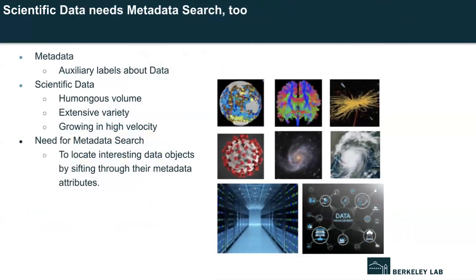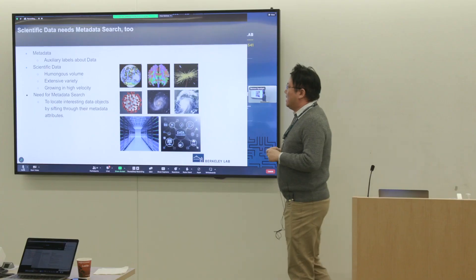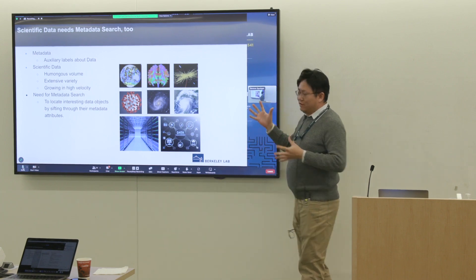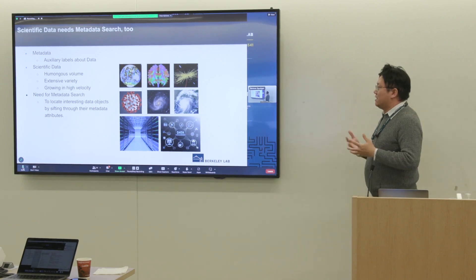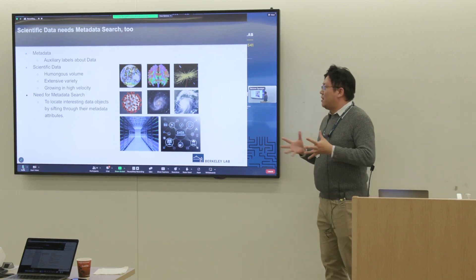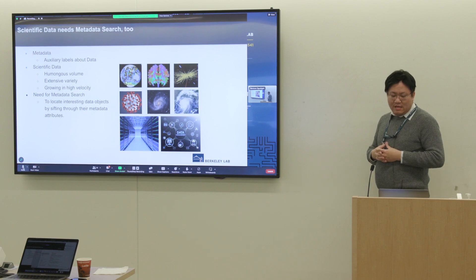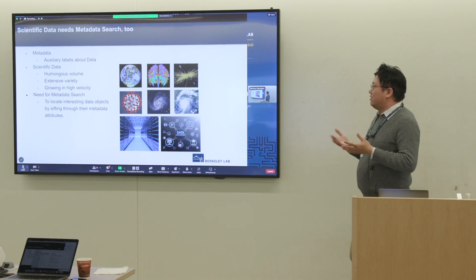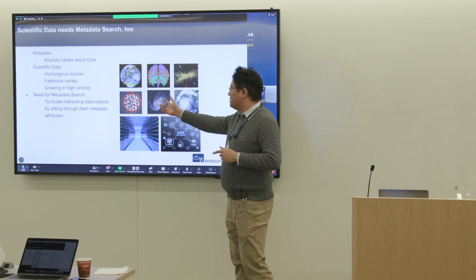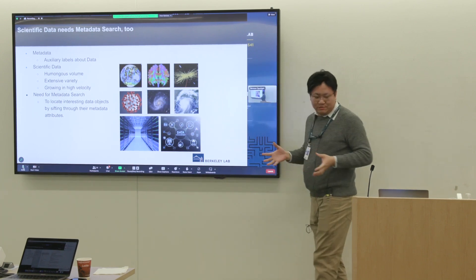In ODM systems, metadata can be considered as a series of auxiliary labels on the data objects. As scientific data grows in volume, variety, and velocity, the number of data objects is not only large but ever-growing. Scientists will heavily rely on metadata search to locate interesting data objects by sifting through their metadata attributes.